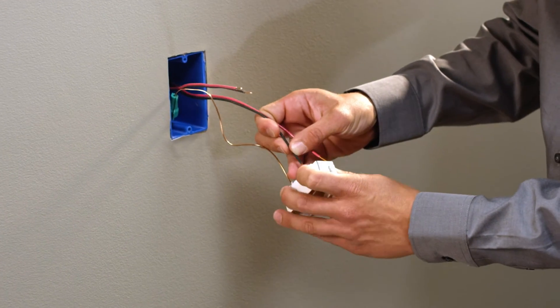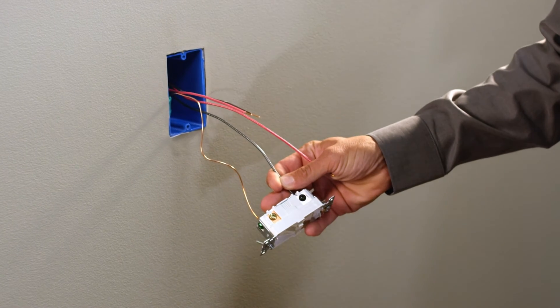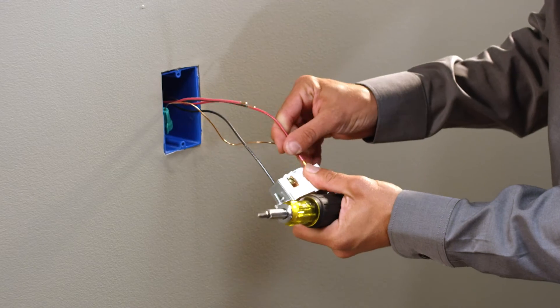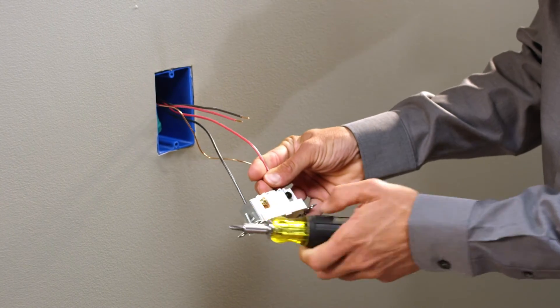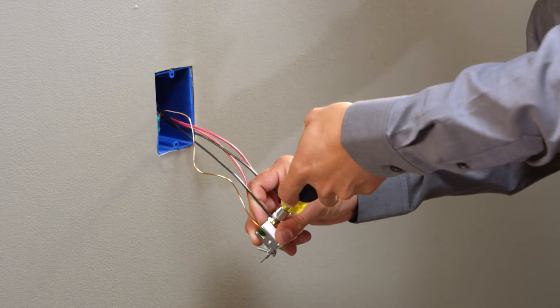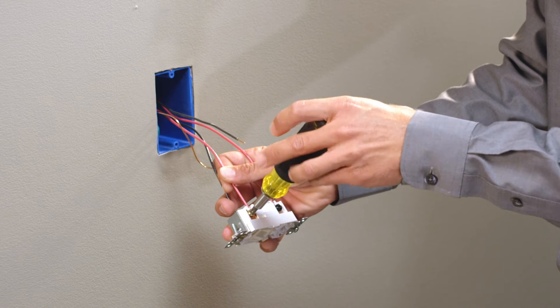Identify the cable coming from the 3-Way switch connected to the electrical panel. Take the black wire from this cable and connect it to the black screw at the bottom left of the switch and the red wire to the upper right black screw. Connect the remaining black wire to the upper left brass screw and the red wire to the lower right brass screw.